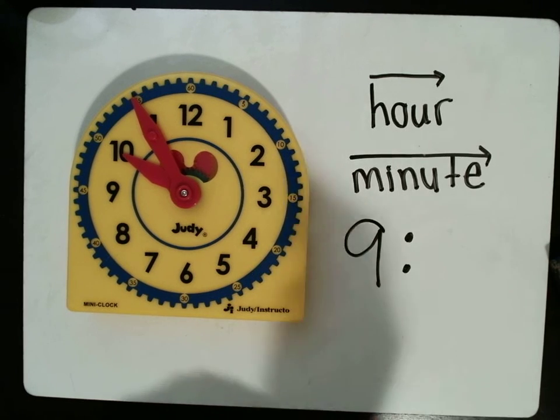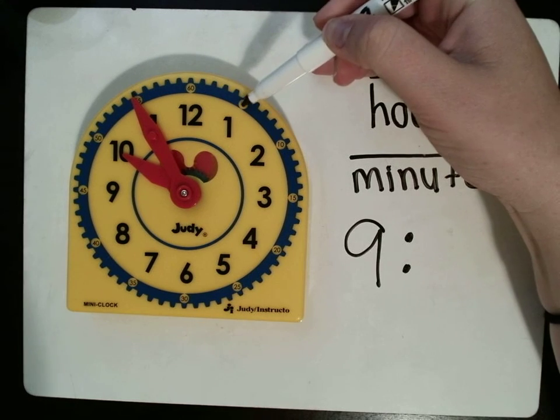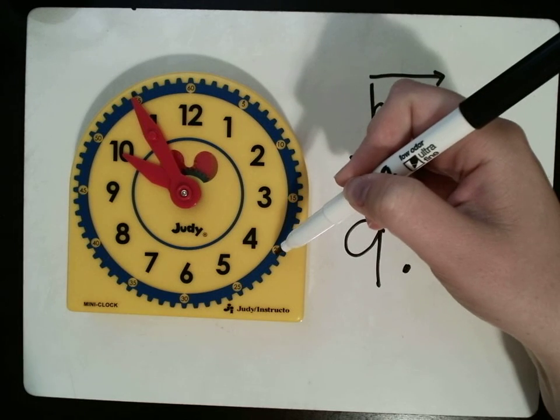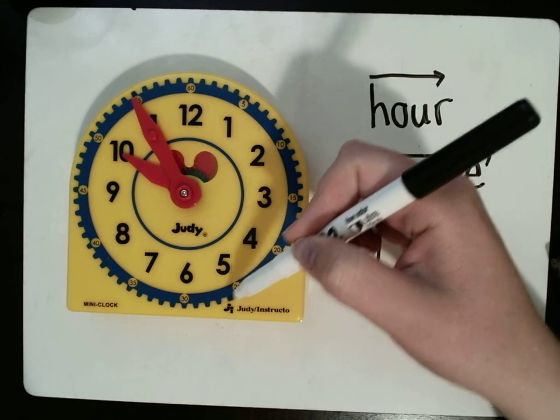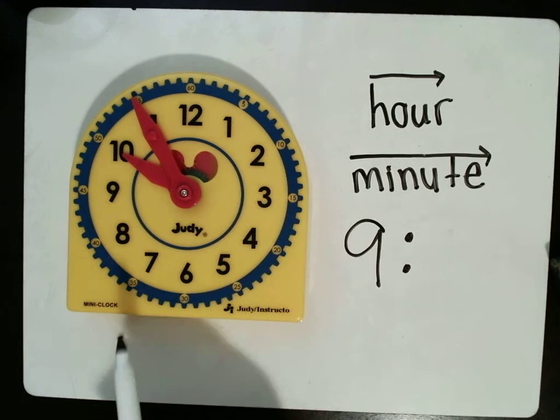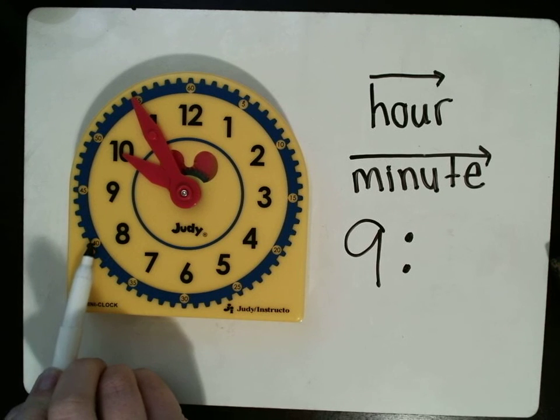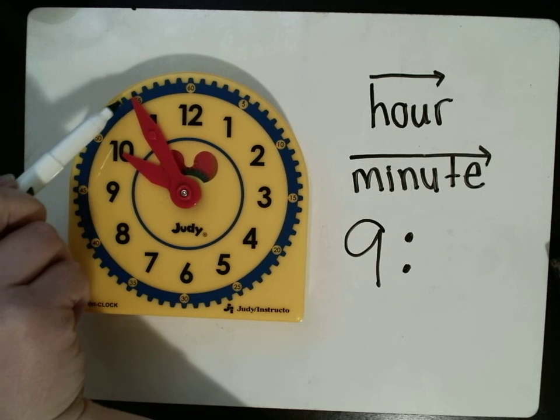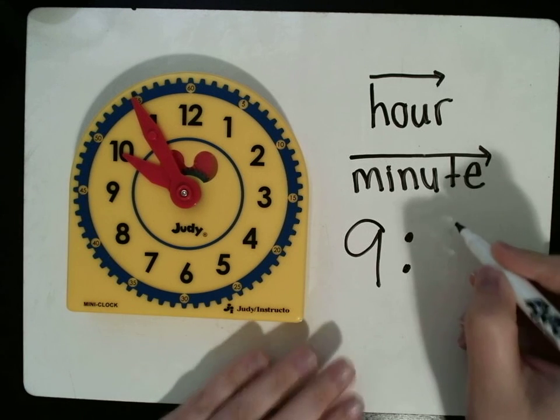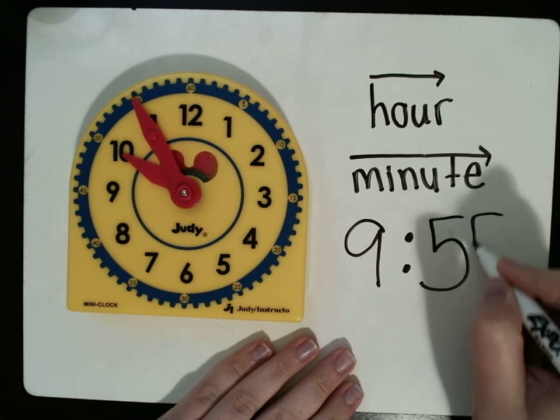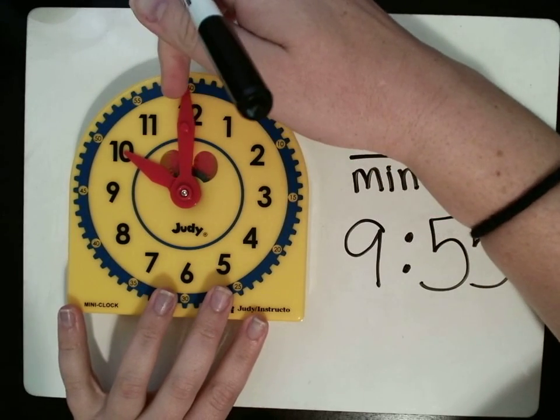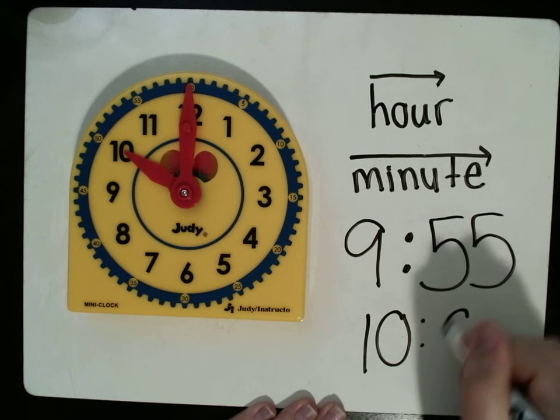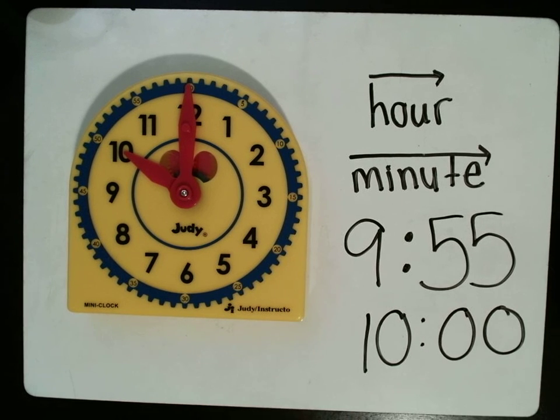But, you still have 5 minutes before it's going to be 10 o'clock, which means the hour is still 9. So, now we have to count our minutes. We have 5, 10, 15, 20, 25, 30, 35, 40, 45, 50, 55. It is 9:55, which means in that last 5 minutes, it's going to be 10 o'clock.